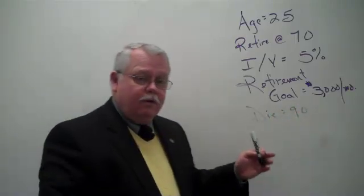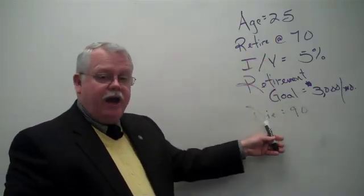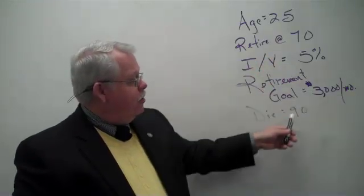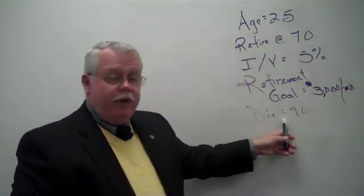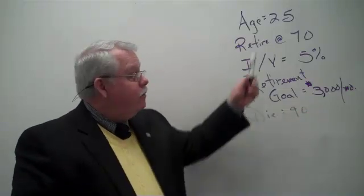And his goal, among others, is that from the time he retires until the time he dies, at least statistically, actuarially, 20 years, over that retirement period he wants $3,000 a month in income from his investments.